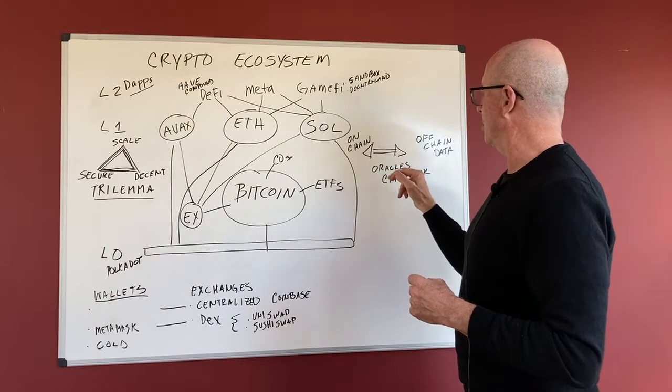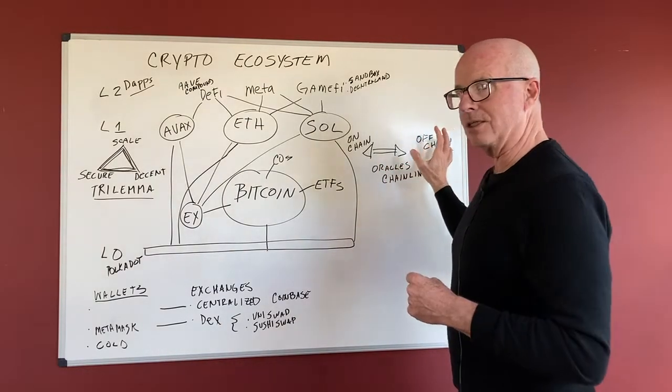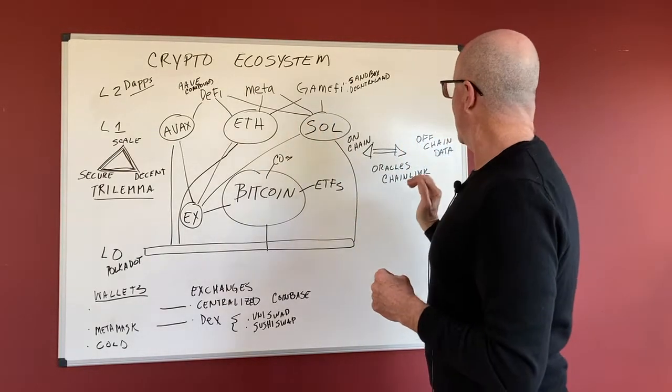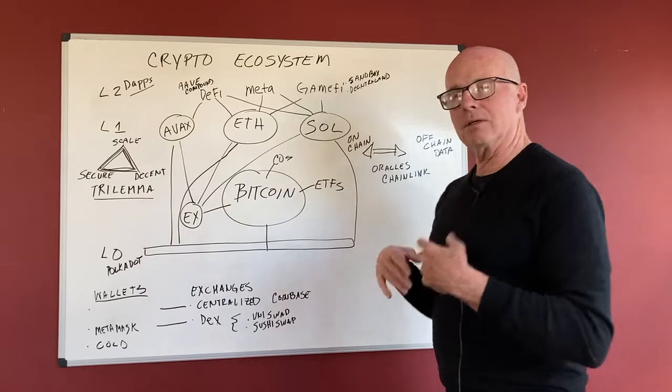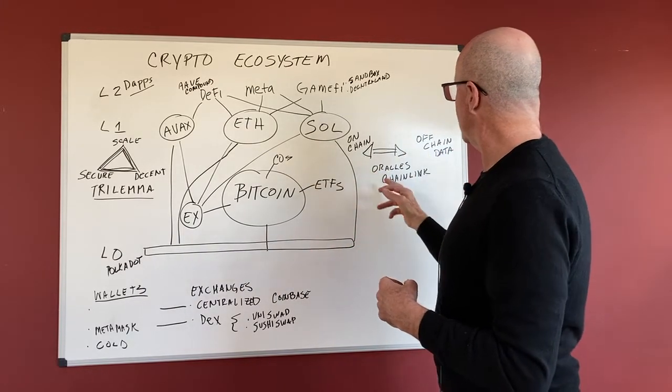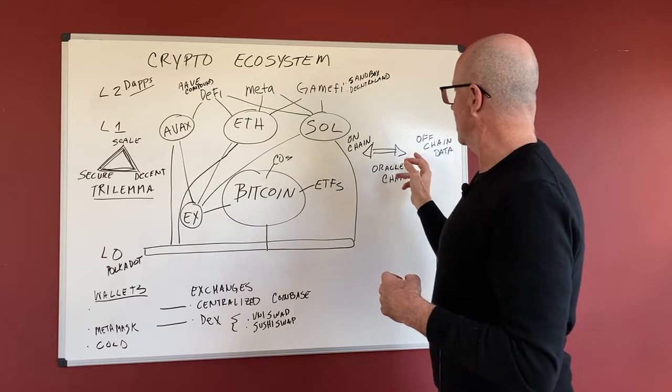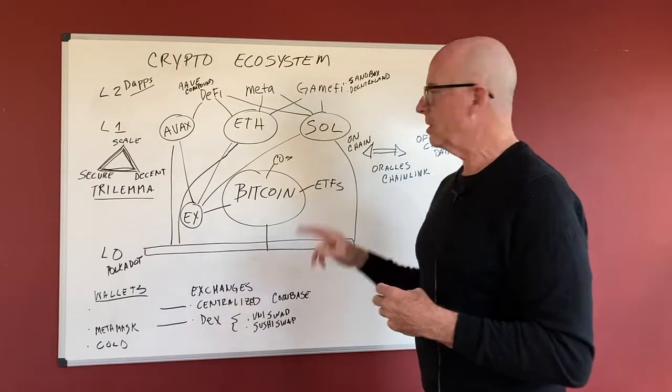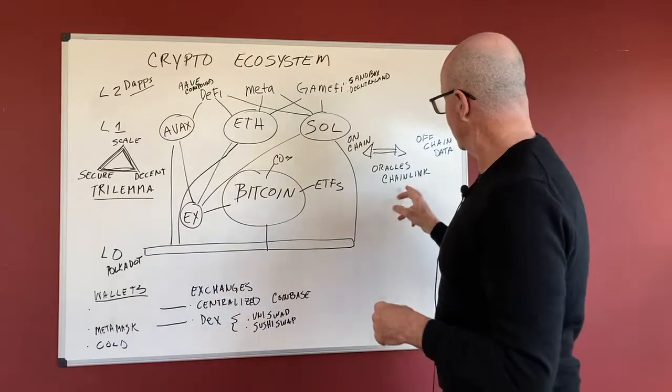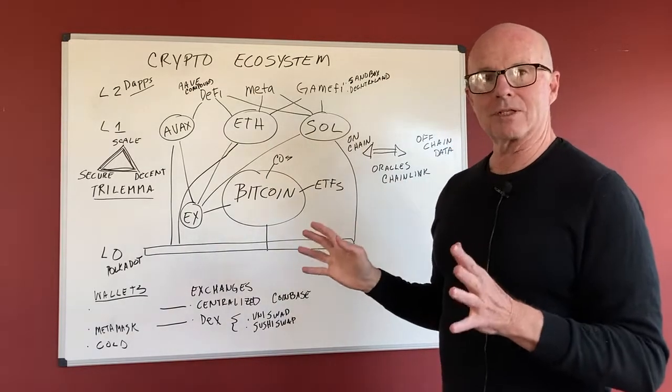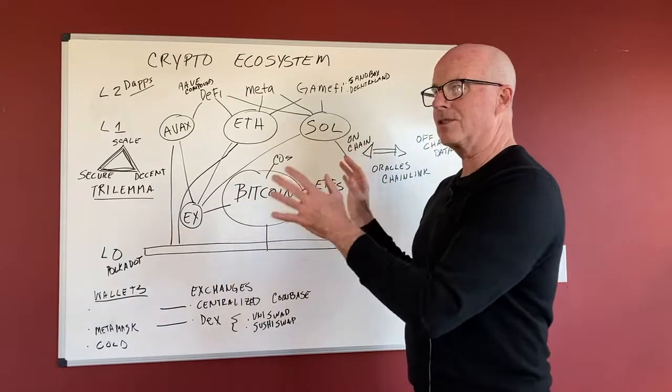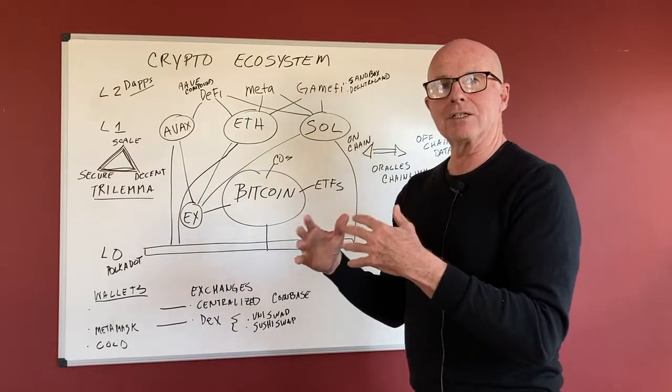So this is called the Oracle problem. How do you get off-chain data in a decentralized manner on-chain onto the blockchain? And Chainlink is a big popular one right now. That's really moving forward in creating decentralized Oracle protocols for getting off-chain data onto the chain. So that's another one you hear about, really exciting company. And it's just ingenious.